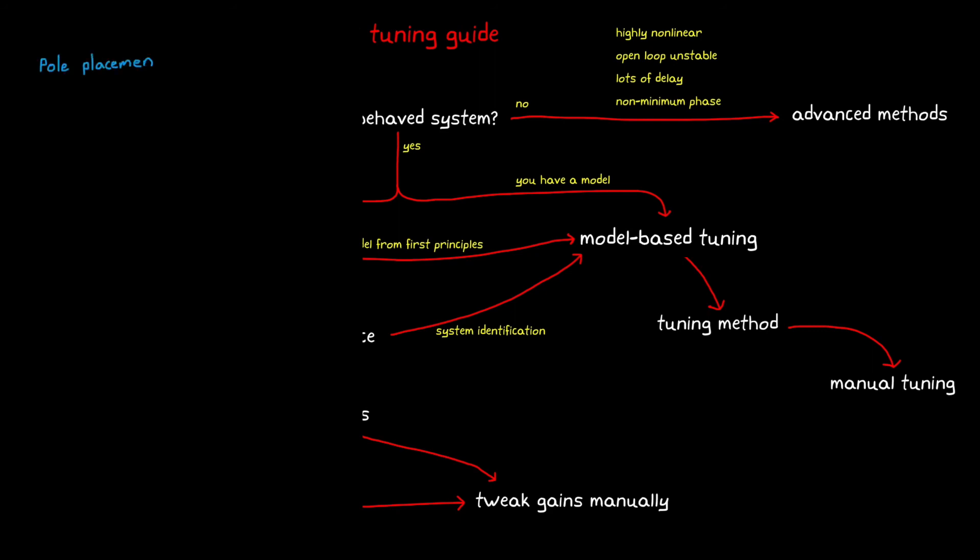First, we can determine where we want to place the closed-loop poles so that the dominant poles produce the system stability and the response that we're looking for. Solving the equation for the proper gains with pole placement is pretty straightforward. However, the downside with this method is that it requires you to know where you want the poles to be and how the zeros in the system are going to affect the response.